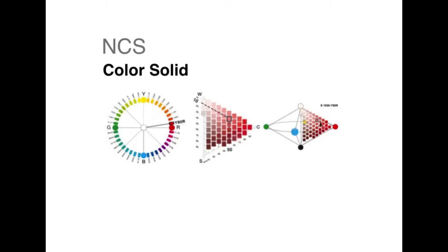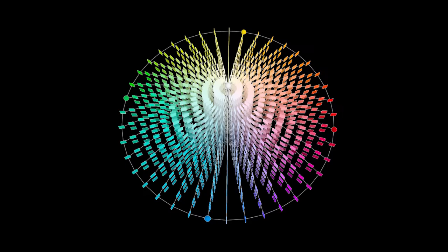We're looking at the NCS hue circle and color triangles. And you can see how this is a larger version of this, which is the red section, but you'll notice the polarity, red, green, and then blue and yellow, and then white at the top, just like in Munsell and Itten, and then black at the bottom, just like in Munsell and Itten.